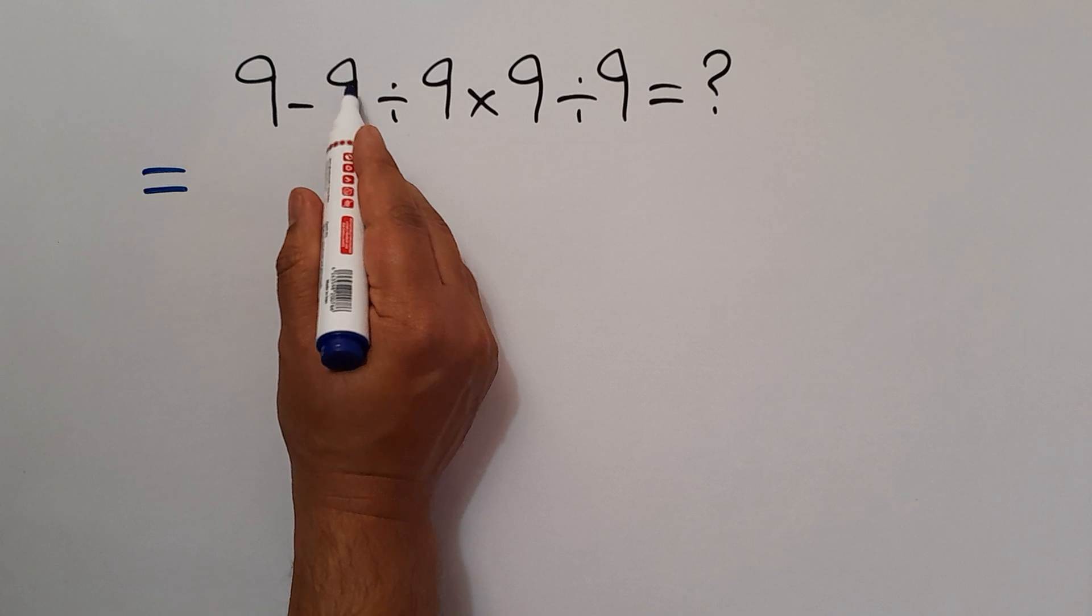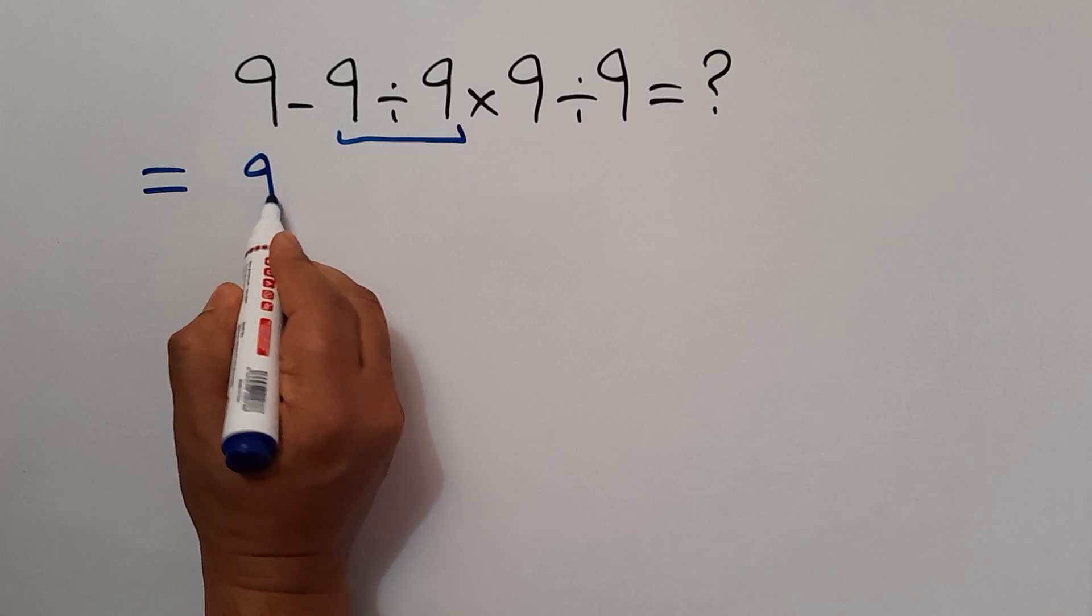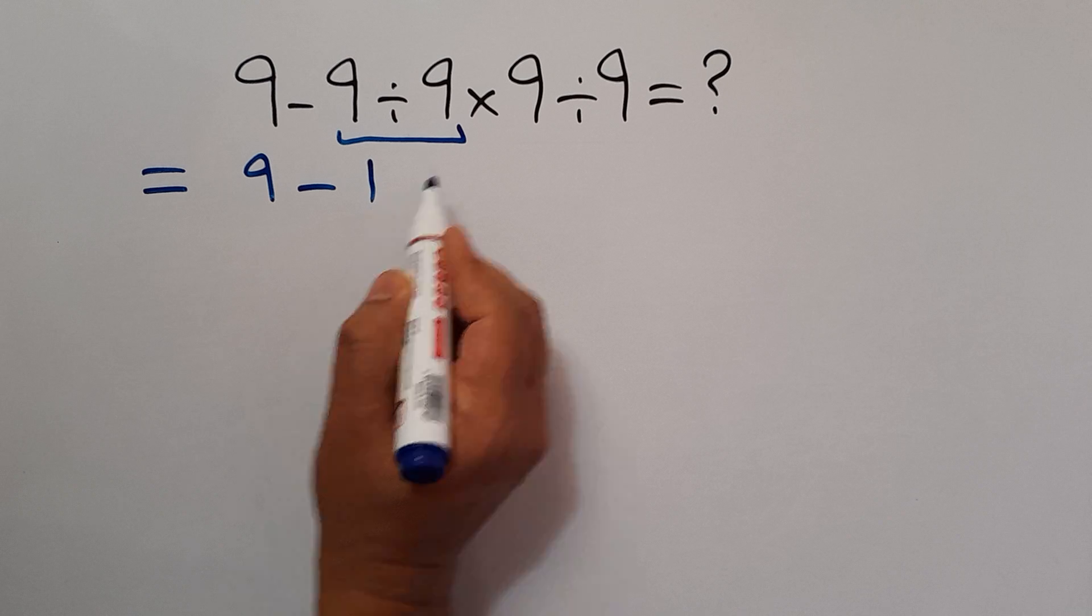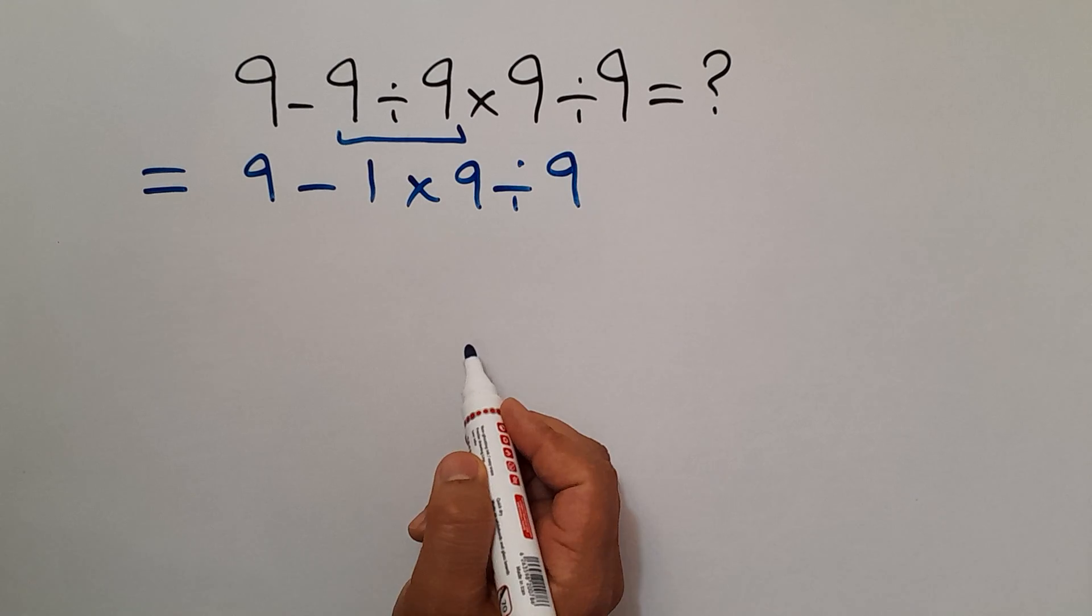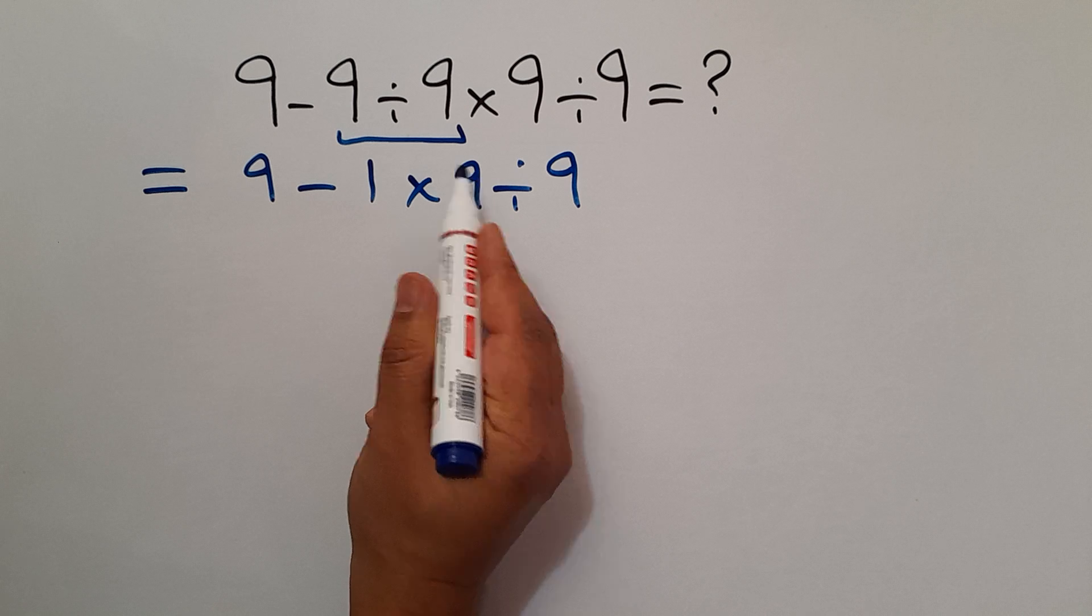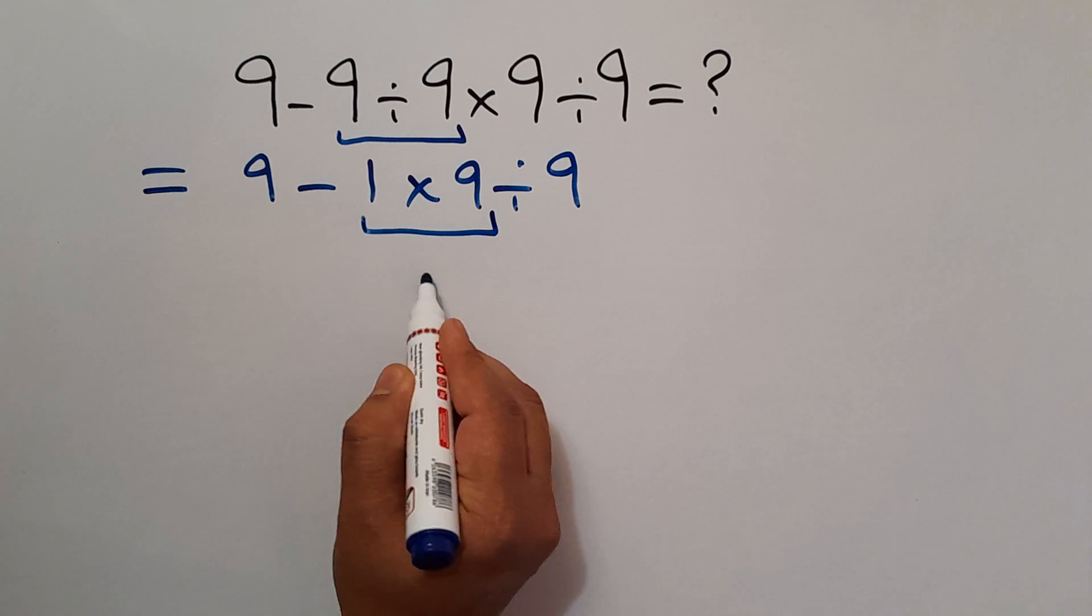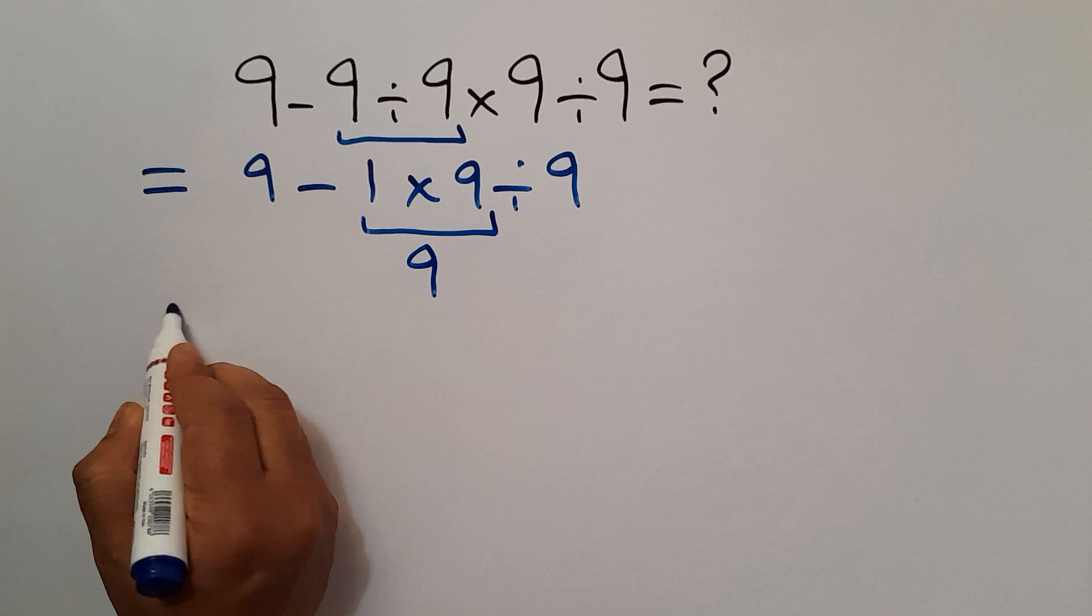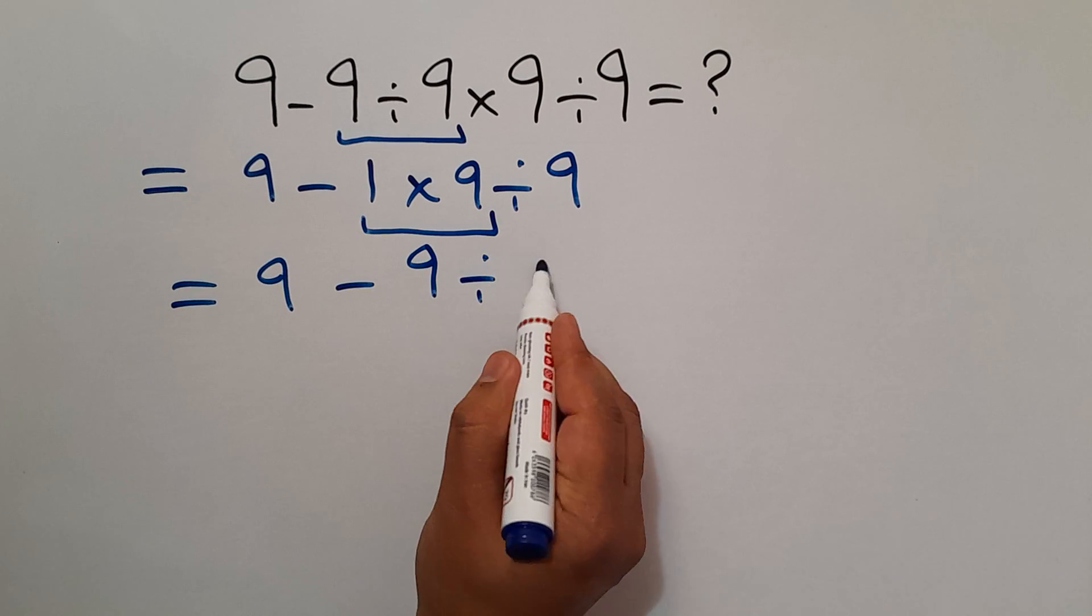So first, 9 divided by 9, which equals 1. So, 9 minus 1 times 9 divided by 9. Note this multiplication: 1 times 9 equals just 9. So, we have 9 minus 9 divided by 9.